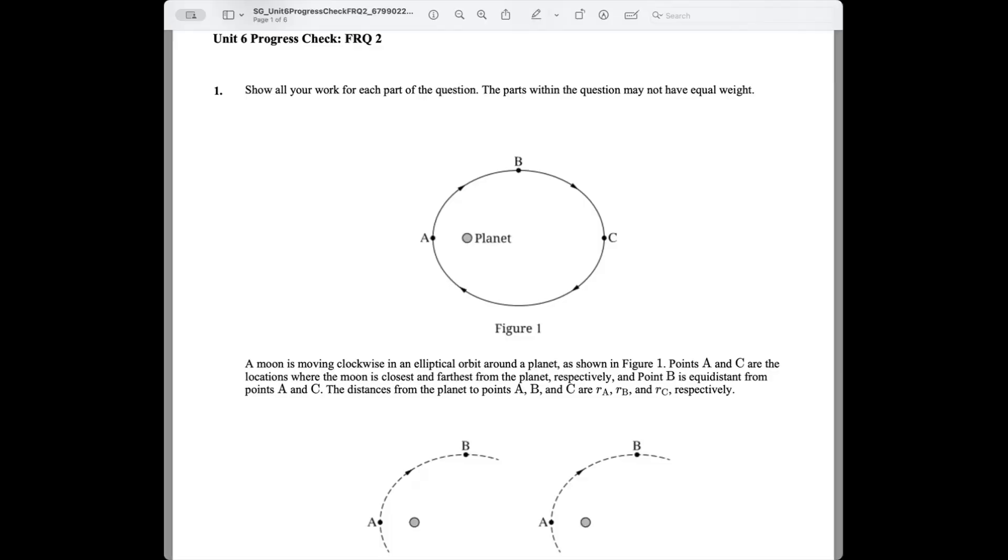AP Physics students, great to see you. It's Mr. Heinrich. We're looking at Unit 6, FRQ 2, from the AP Classroom Progress Checks. Let's look at this one.